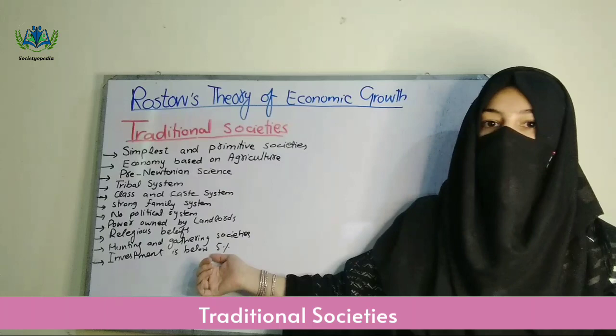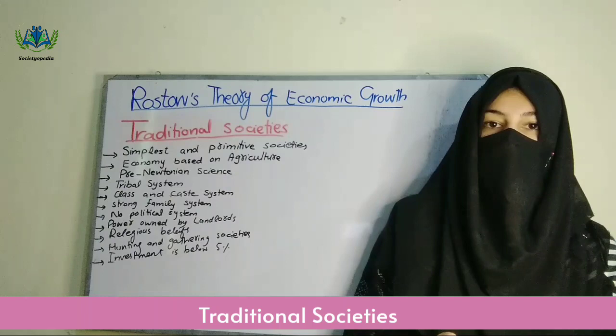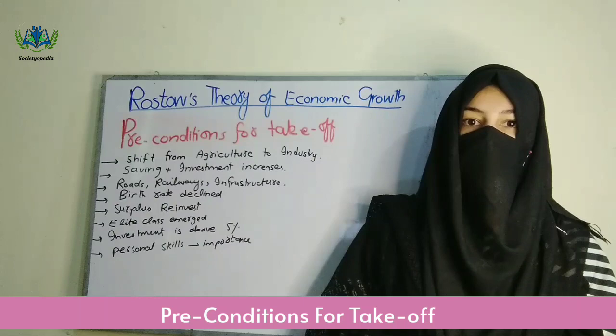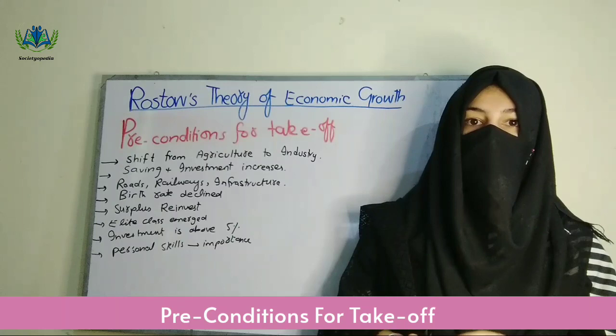Investment is less than 5% in traditional societies. Production can be increased but only to a specific limit — this is a negative point or criticism: that production is very limited. So this concludes traditional societies.